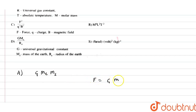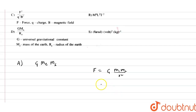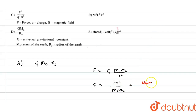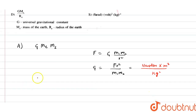From F = Gm₁m₂/r², we get G = F·r²/(m₁·m₂). Writing the units: G = Newton × meter² / kilogram², which is the unit of the universal gravitational constant G.